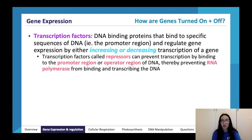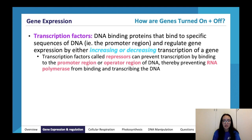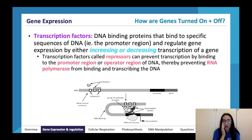Genes are turned on and off through transcription factors — DNA-binding proteins which bind specific sequences of DNA at the promoter region and other regions to regulate gene expression, either increasing or decreasing transcription. Repressors are transcription factors that prevent transcription by binding to the promoter or operator region of DNA, thereby preventing RNA polymerase from binding. Activators bind to enhancer regions and lead to higher levels of transcription; repressors bind to operator regions and suppress or prevent transcription, down-regulating a gene.